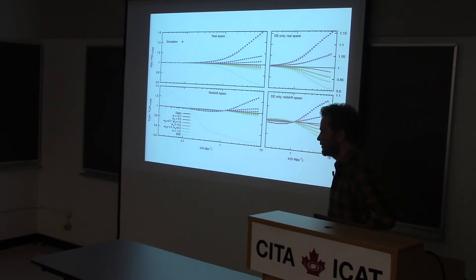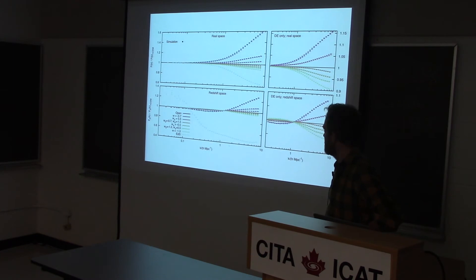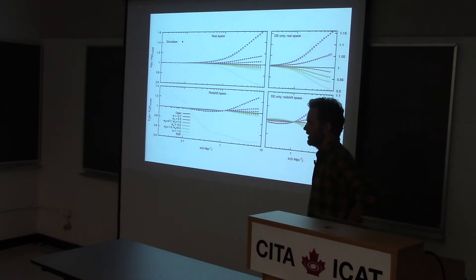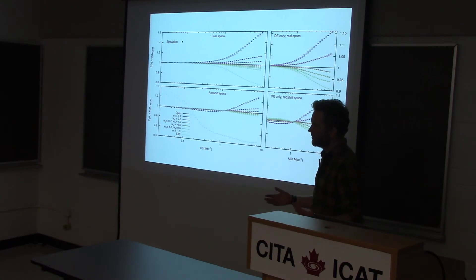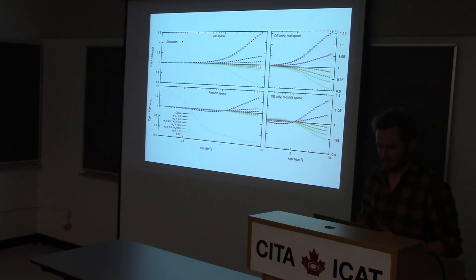Audience question: you fixed these to have the same linear theory power spectrum at redshift zero, but at the time most of those halos were being formed, each model had a different linear theory. Is that really what we're seeing here — the fact that the normalization was set at redshift zero and that earlier history is actually more relevant? Response: Yes, that's definitely one way to think about it. The power spectrum does care about what happened in the past, which is kind of obvious.